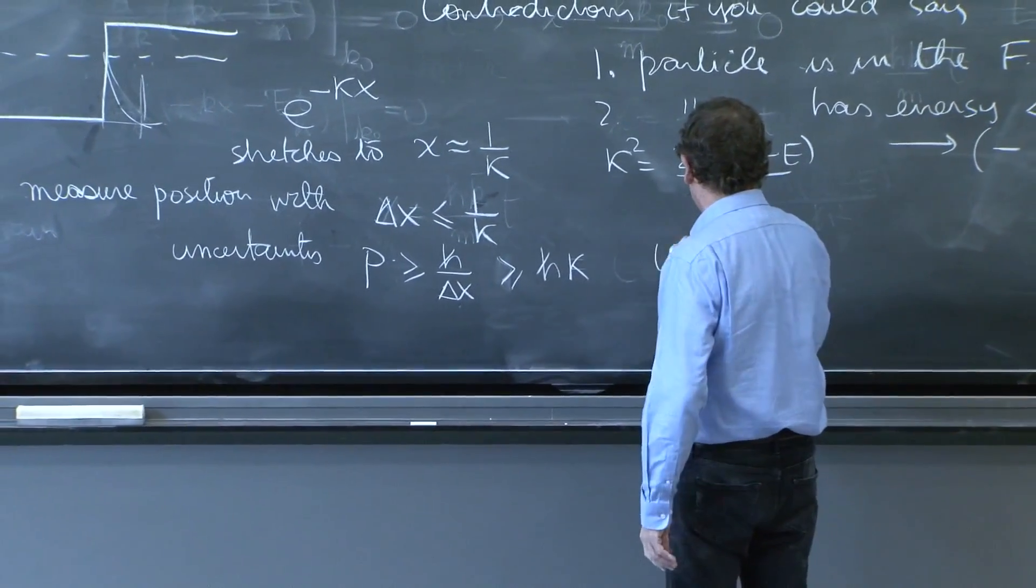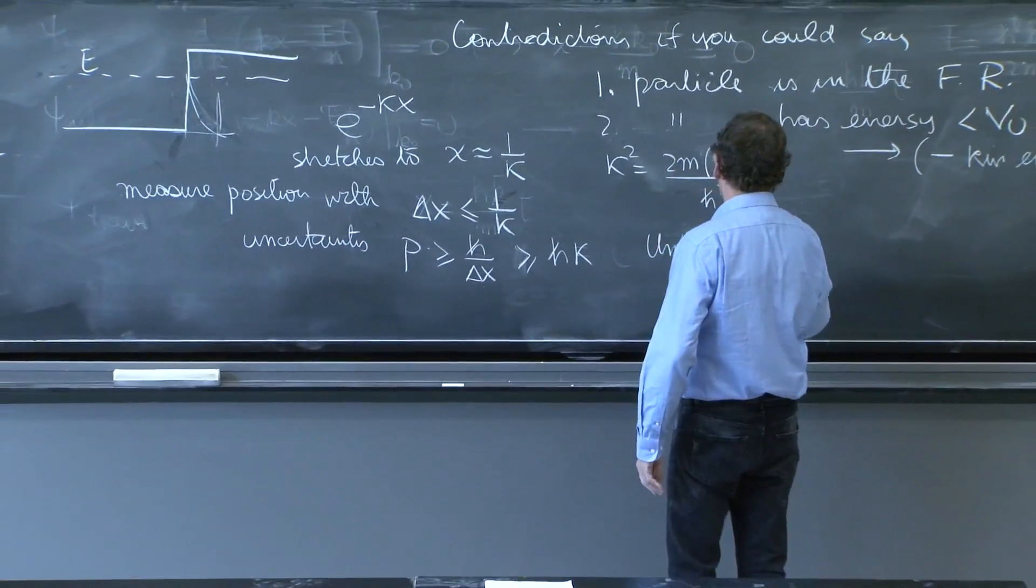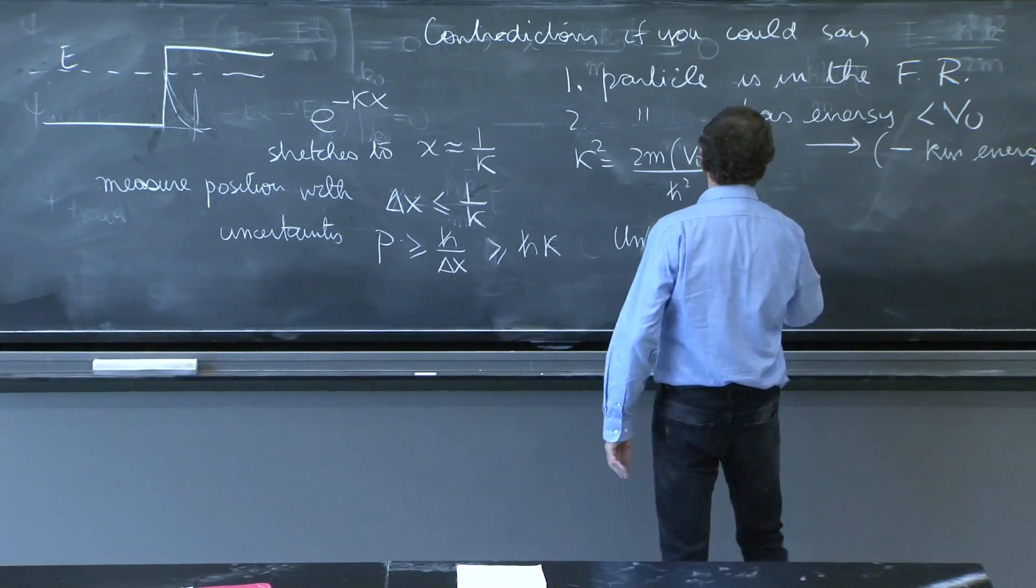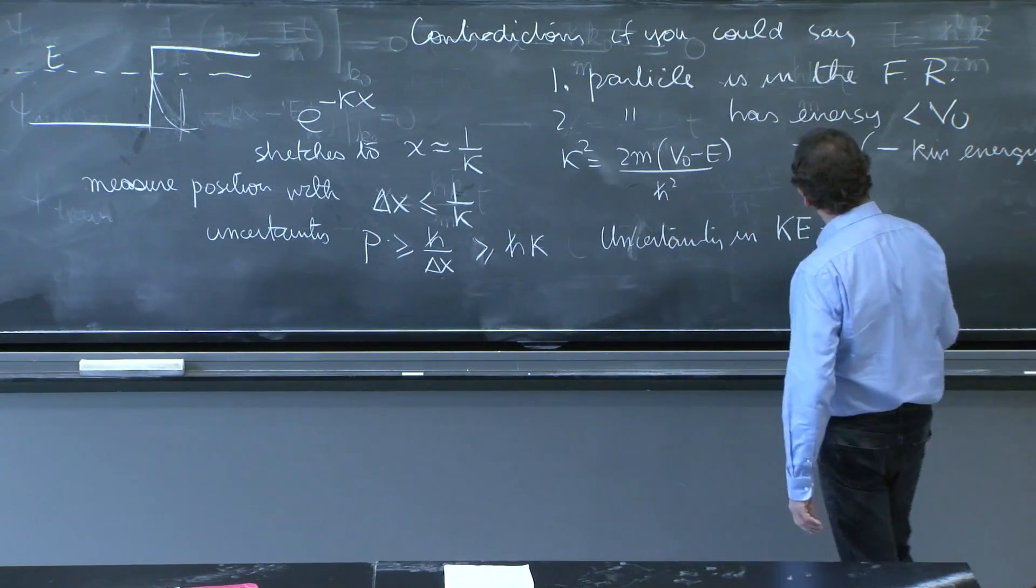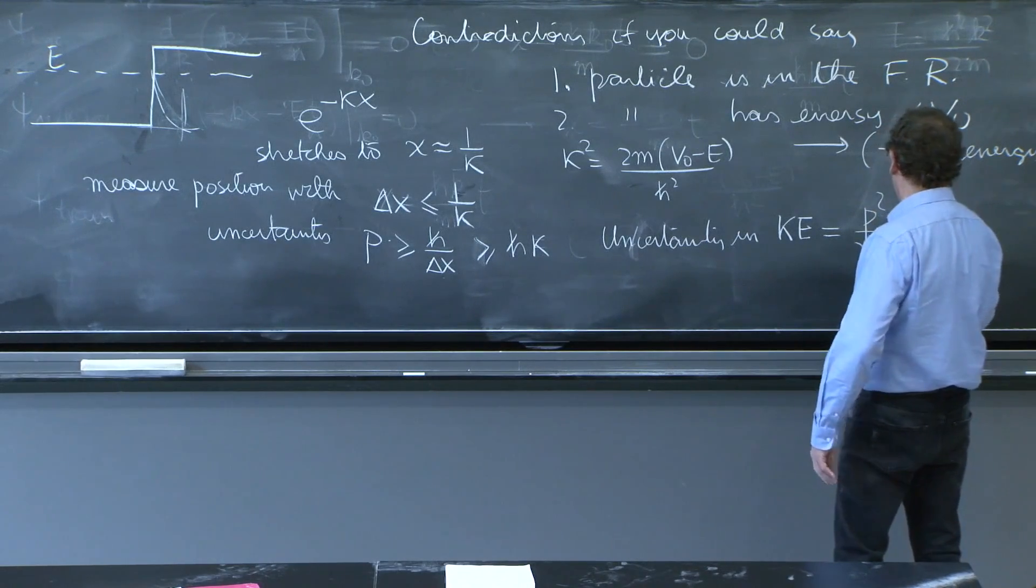And therefore, this particle has now some kinetic energy due to this uncertain momentum. So uncertainty in the kinetic energy is how much?